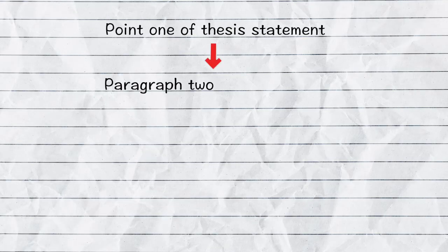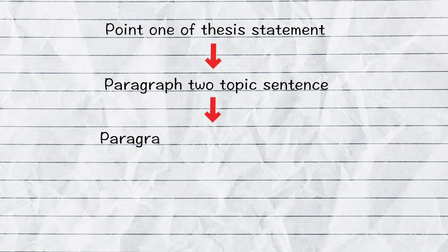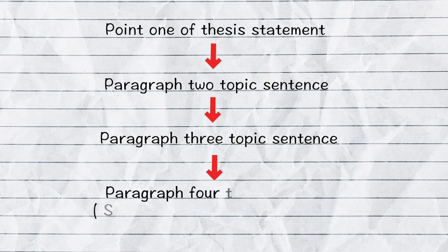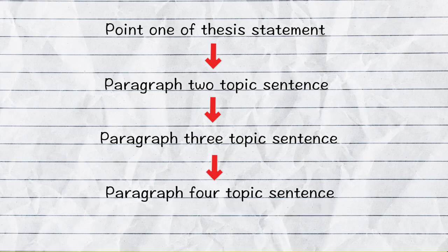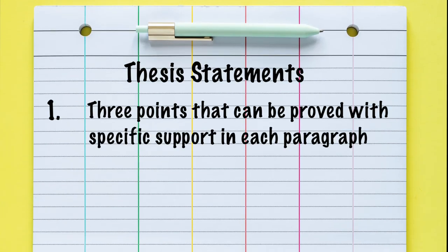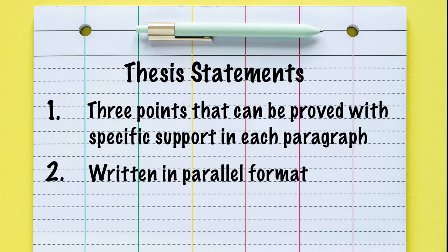Point one of the thesis statement forms the topic sentence of paragraph two. Point two forms the topic sentence of paragraph three. And the strongest, most important point forms the topic sentence of paragraph four. Thesis statements must include three distinct points that you can prove with specific support in each body paragraph.